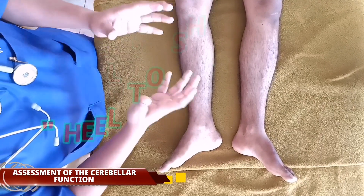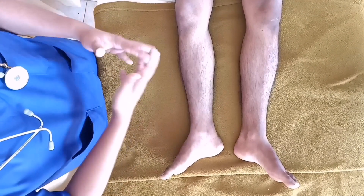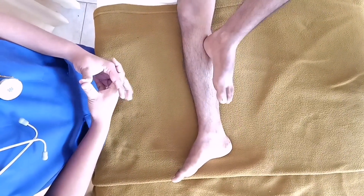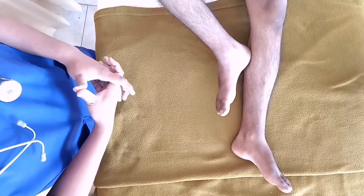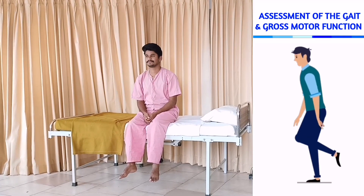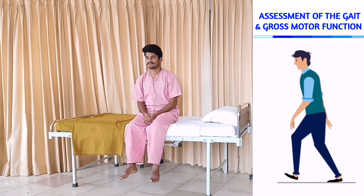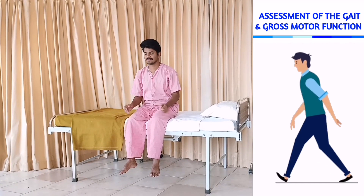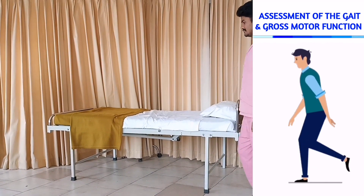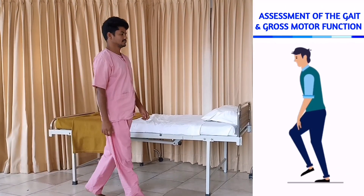Cerebellar function: heel-to-shin test. Can you please place the heel of one leg on the opposite leg's knee and slide down to the ankle? Yes, sir. Normally the patient should be able to do this in a straight line along the shin. Now assess the patient's gait and gross motor function. Mr. Ajay, can you walk 10-15 feet, turn, and then walk back towards me? His movement should be smooth and coordinated, his arms should swing freely, and he should turn without losing balance.